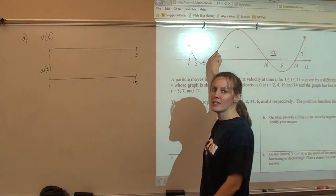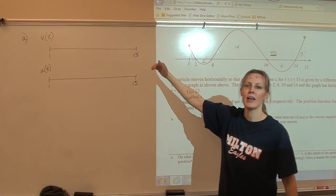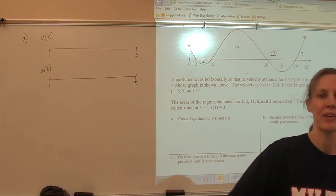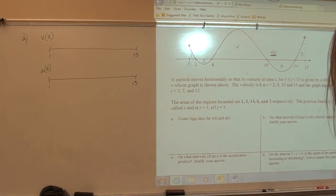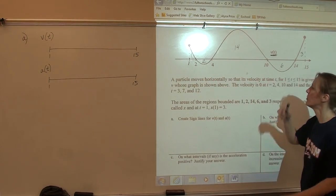To recap for videos, this is a graph of a velocity function, and we're making sign lines for both the velocity and the acceleration based on the graph. The critical numbers for the velocity, the values where velocity is either 0 or undefined, would be 2, 4, 10, and 14.